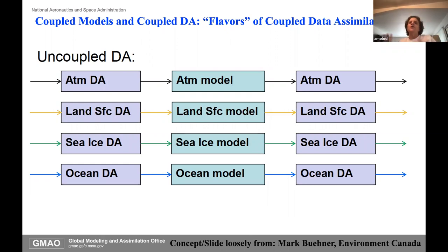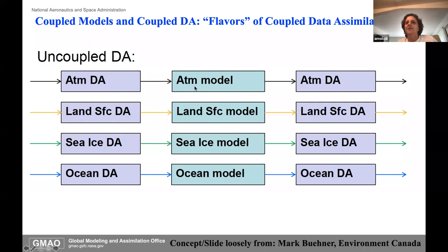I want to give a sense of the different flavors of coupled DA. Totally uncoupled means each system—the atmosphere, the land, the sea ice, the ocean—runs an independent data assimilation, drives an independent model, and makes the first guess for the next independent DA. So everything uncoupled.